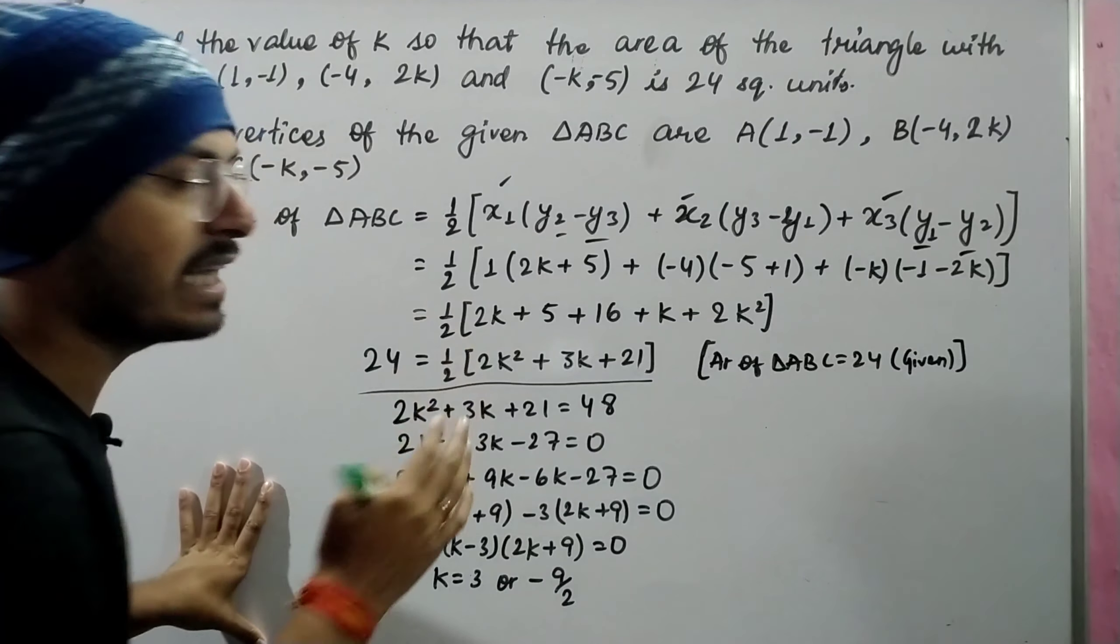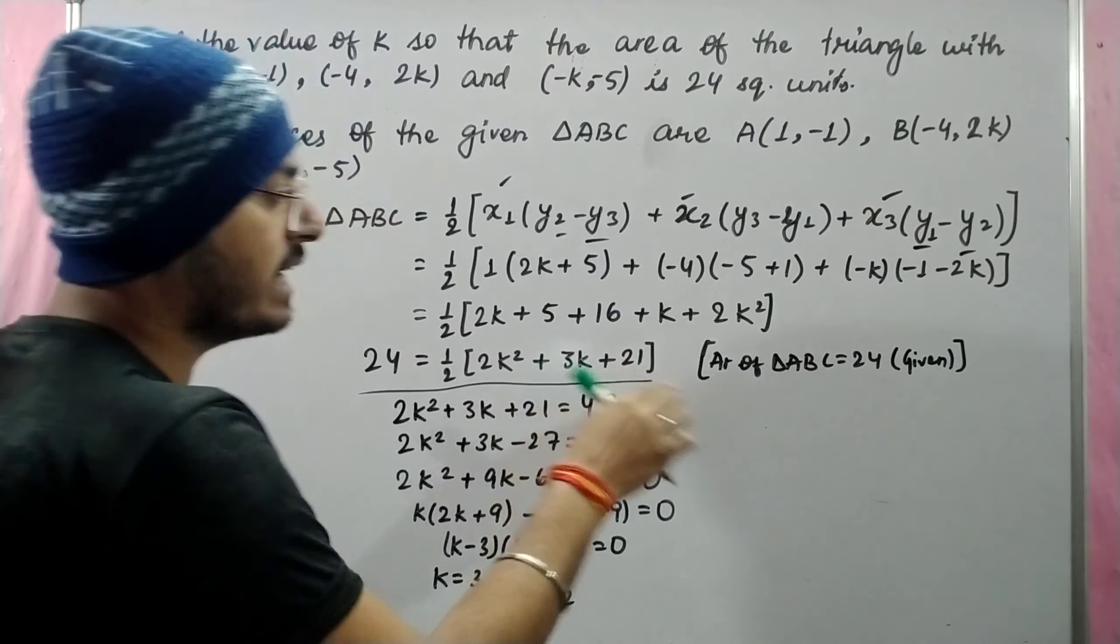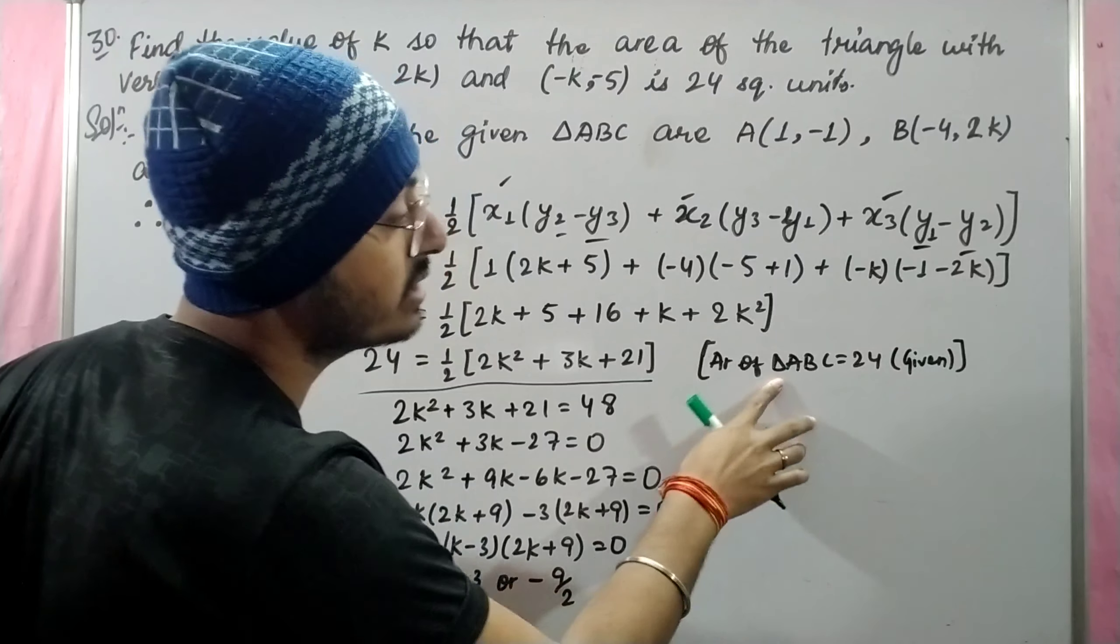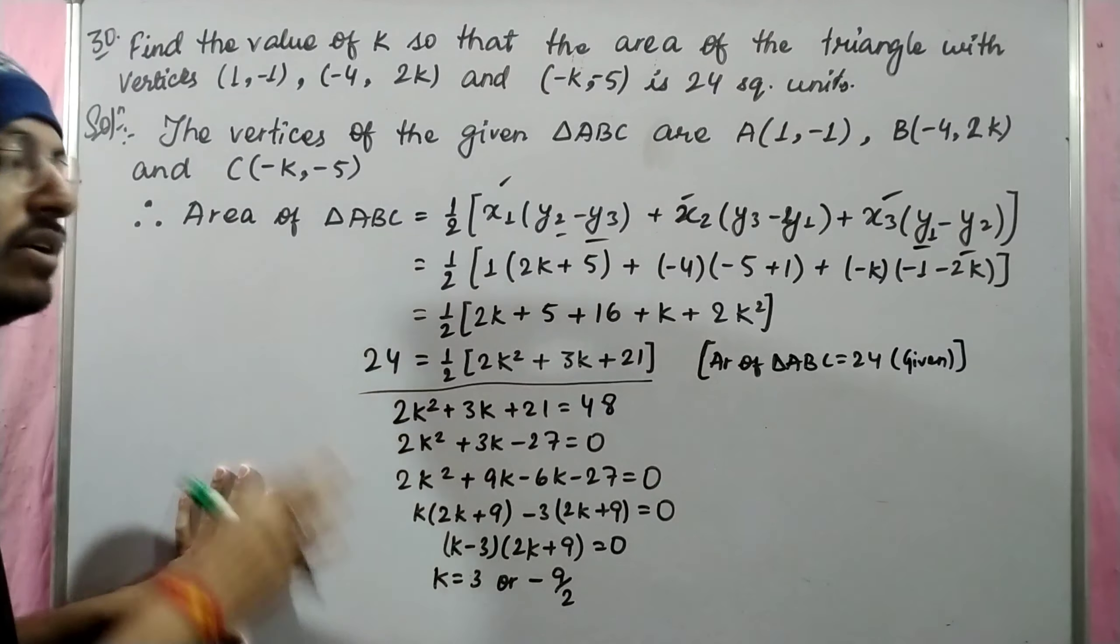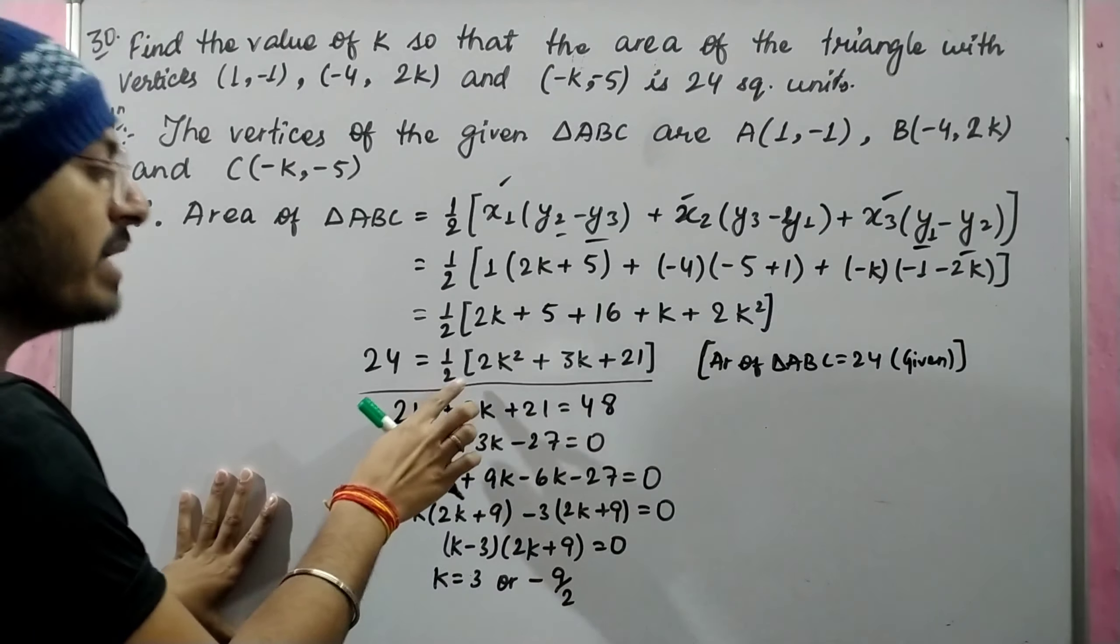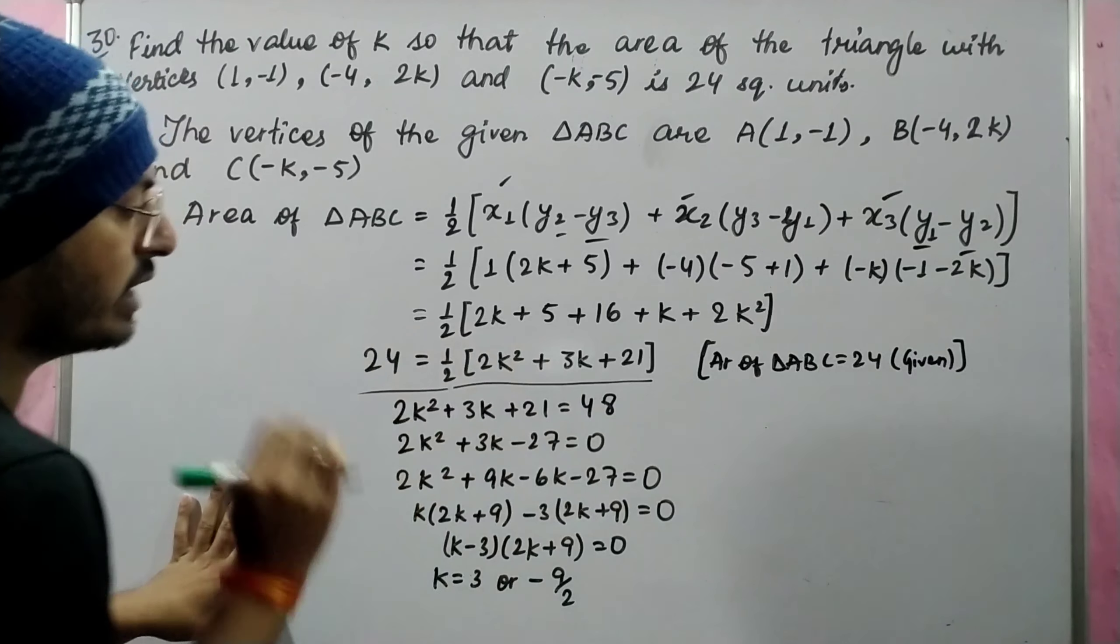It's not simple but it's done. Look at the area of triangle ABC. There are 24 square units given. Equate to 24. The 2 divides, multiply into 48. You can simply solve it.